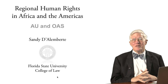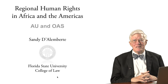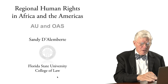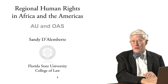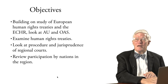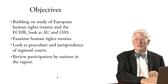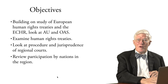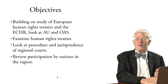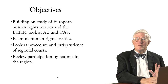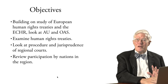Today we want to continue our discussion of regional human rights, looking at Africa and the Americas. The institutions we're dealing with are the African Union and the Organization of American States. Our objectives are to build on the study of European human rights measures and the European Convention of Human Rights, and compare what has gone on in Europe with what takes place in Africa and the Americas.